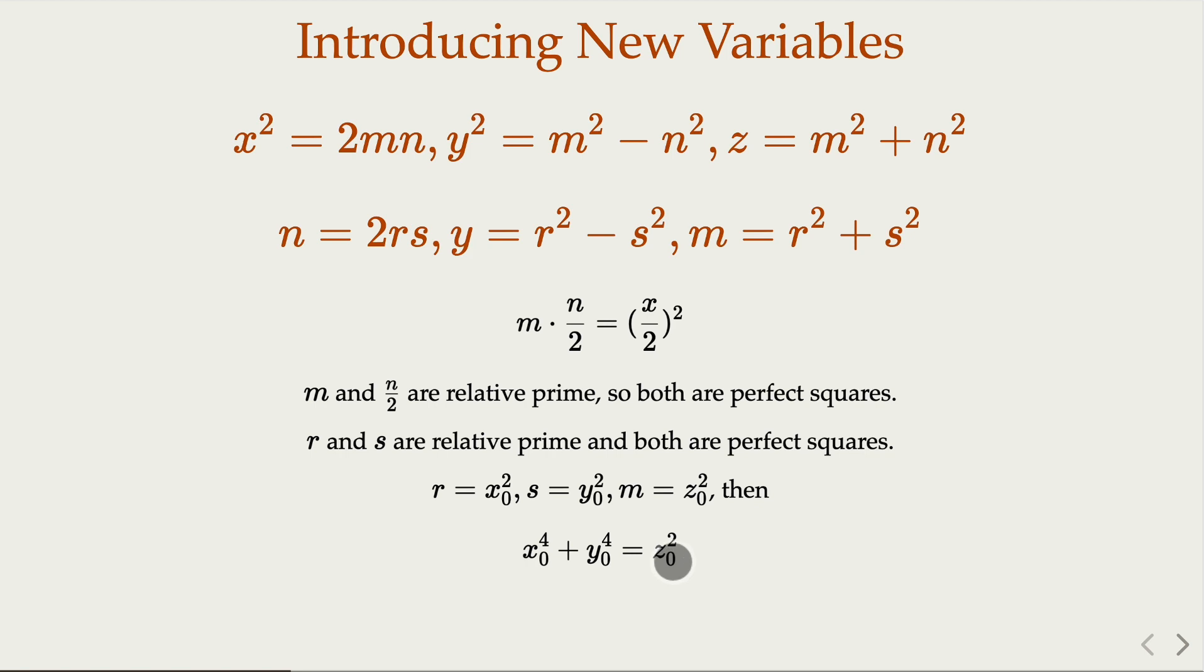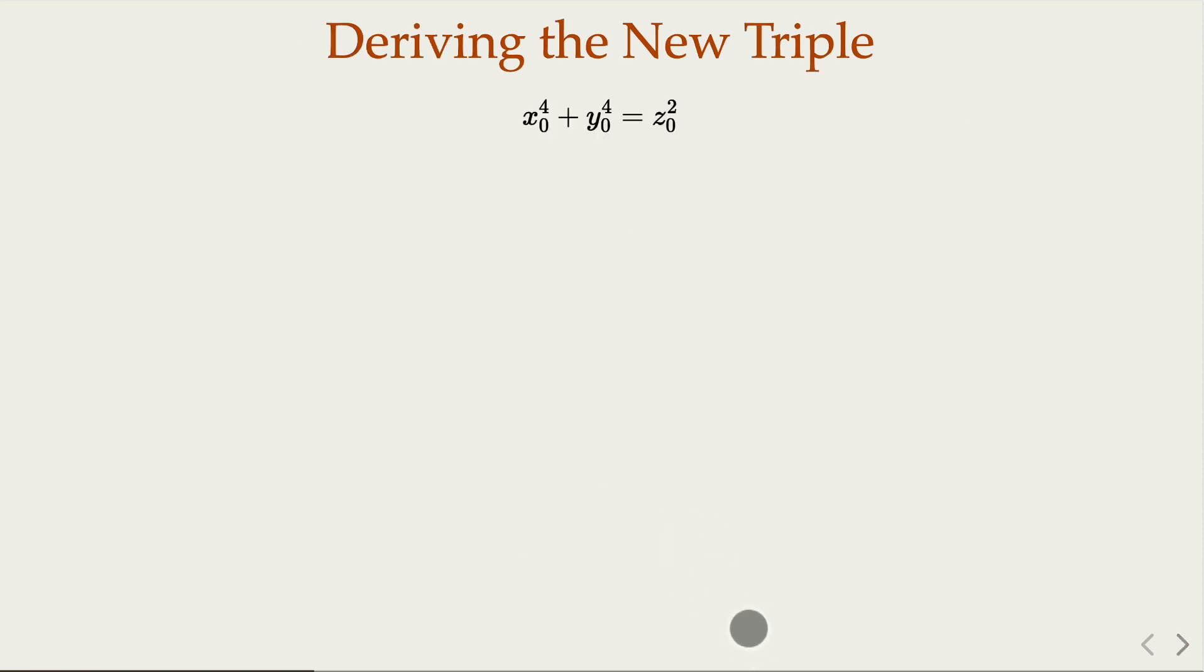We have found another integer solution for this equation. However, z0 here is getting smaller. So original z is m squared plus n squared, which is, of course, greater than m squared, and m squared here is greater than z0.